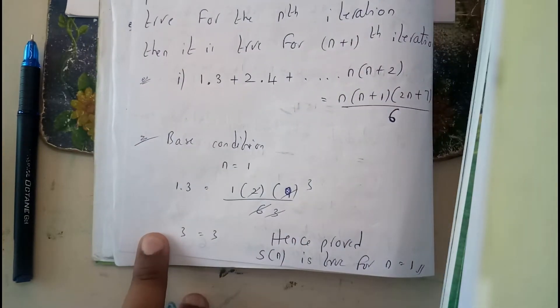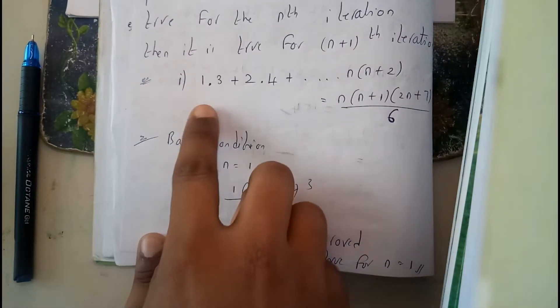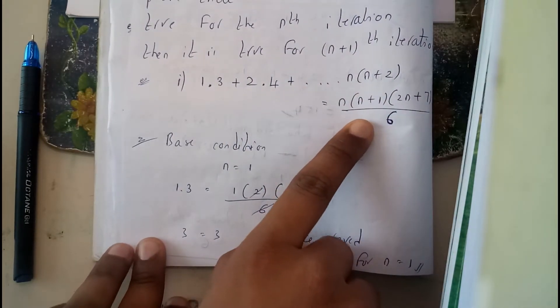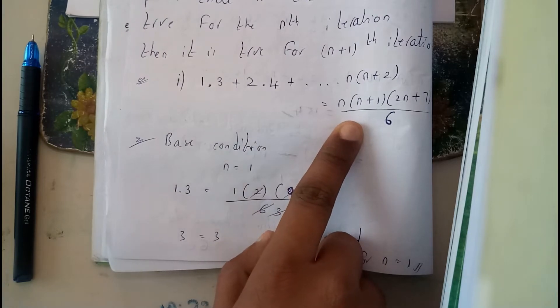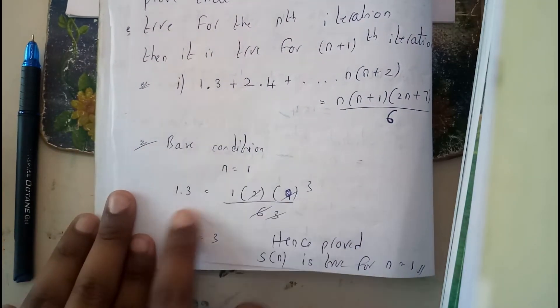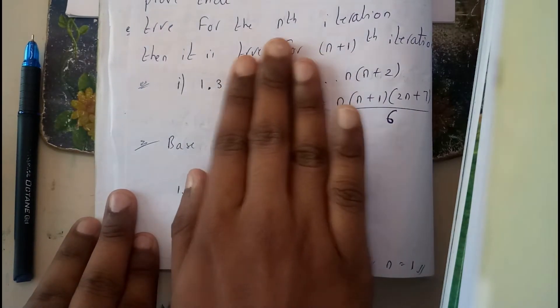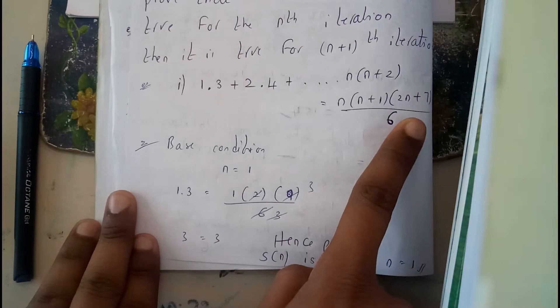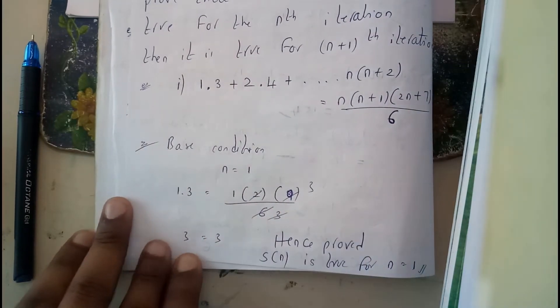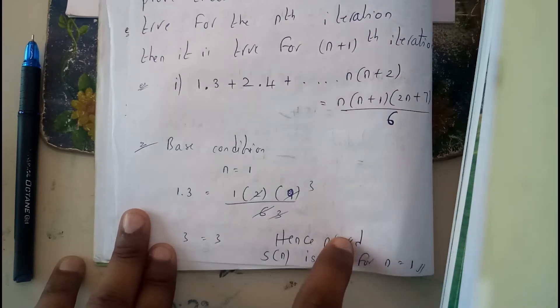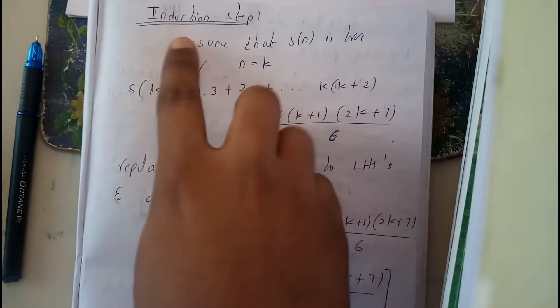Let's take the example: 1×3 + 2×4 + ... + n×(n+2) = n(n+1)(n+7)/6. For the base condition, n=1: the first term is 1×3 = 3, and on the right-hand side 1×2×9/6 = 3. So 3 = 3, hence proved. S(n) is true for n=1, so the base condition is satisfied.